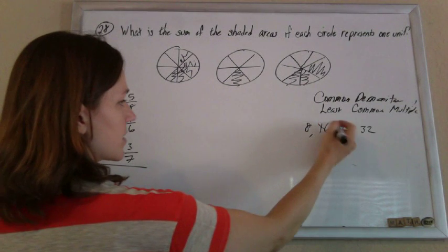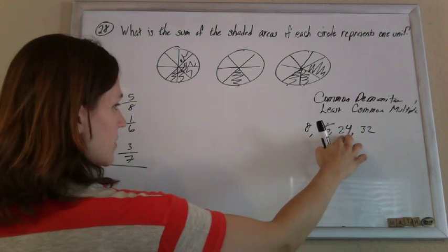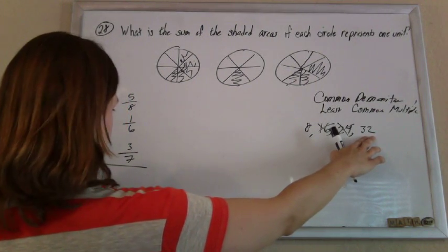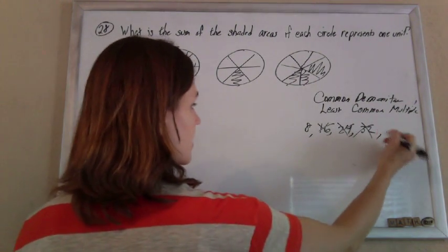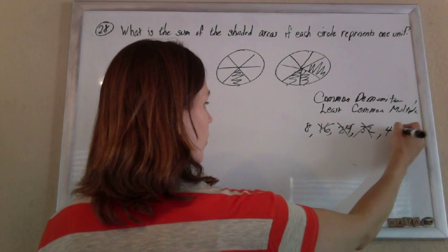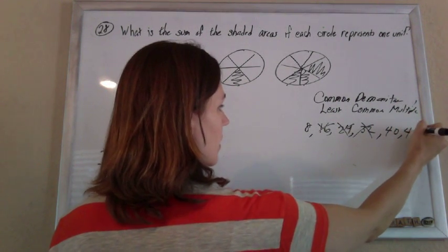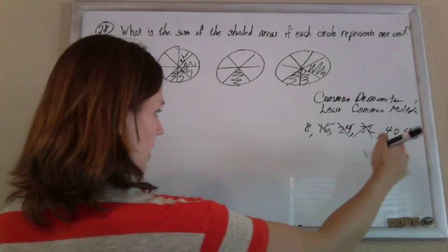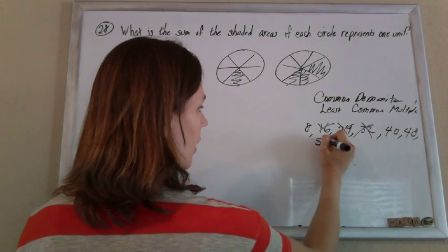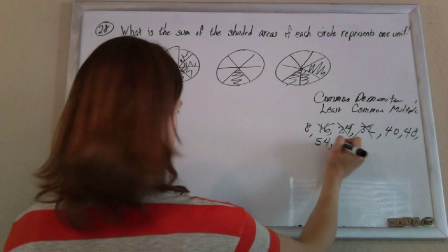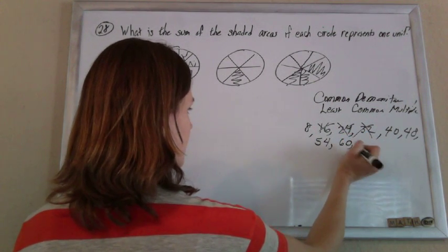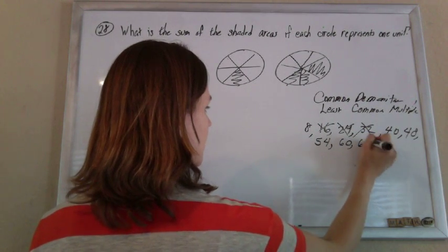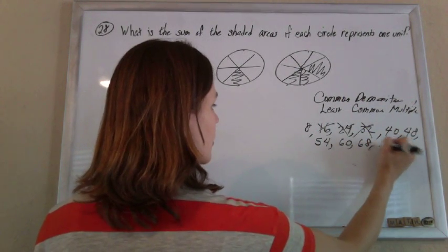16 is not divisible by 6, so he's out. 24 is divisible by 6, but not by 7. He's out. 32 is not divisible. So you just keep going. 40 is not divisible by 6. 48 is divisible by 6, but not by 7. 54 is divisible by 6, but not by 7. 60, same deal. 68.